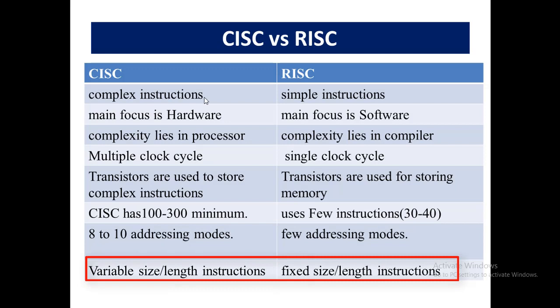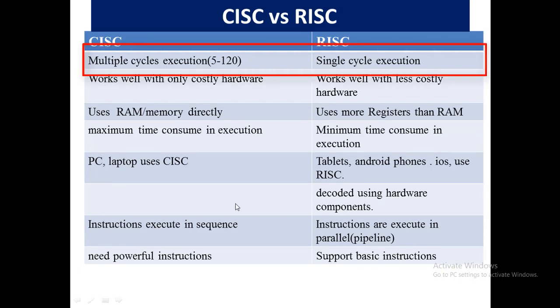Instruction size is not fixed in CISC — all the instructions are of variable size and variable length. While on the other hand, in RISC all instructions are fixed size and fixed length, which is why it takes only one clock cycle to execute a single instruction. CISC requires between 5 to 120 multiple cycles to accomplish a task, while RISC has single cycle execution of a single instruction.